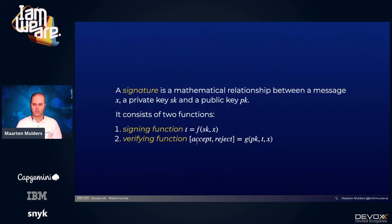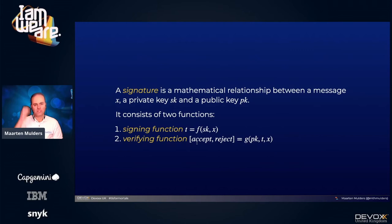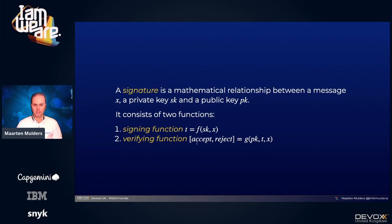From a mathematical perspective, a signature is actually two things: a signing function that takes the private key and the message and returns some value T, and a verifying function that takes the message, the signature, and the public key and responds with either 'accept' or 'reject.' Based on that, you can determine for yourself if you want to trust the message or not.